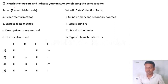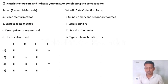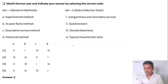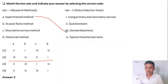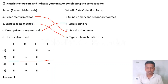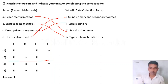Match the following: Set 1 shows research methods — experimental method, ex-post facto method, descriptive survey method, historical method. Set 2 shows data collection tools — primary and secondary sources, questionnaire, standardized test, typical characteristic test. The right answer is Option 2: experimental method uses standardized test; ex-post facto method uses typical characteristic test; descriptive survey method uses questionnaire; historical method uses primary and secondary sources.